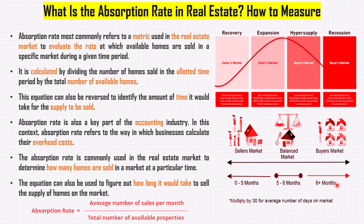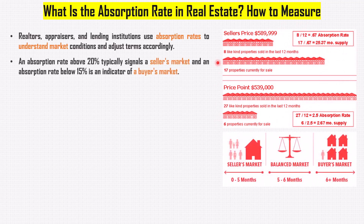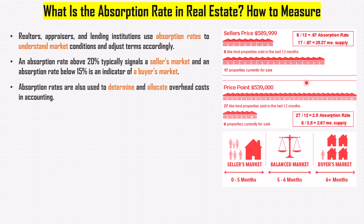Realtors, appraisers, and lending institutions use absorption rates to understand market conditions and adjust terms accordingly. An absorption rate above 20% typically signals a seller's market, and an absorption rate below 15% is an indicator of a buyer's market. Absorption rates are also used to determine and allocate overhead costs in accounting.